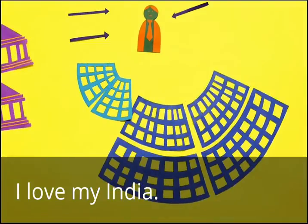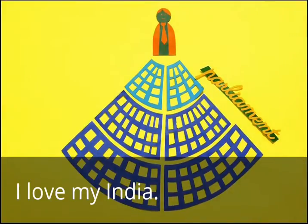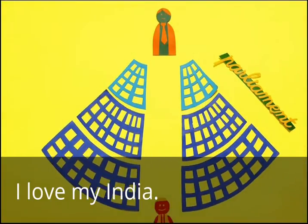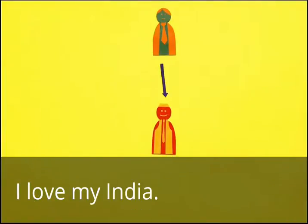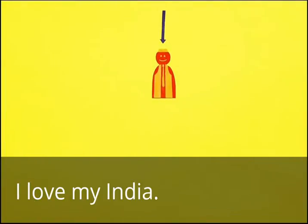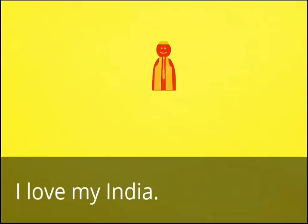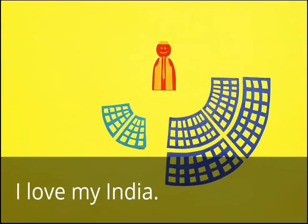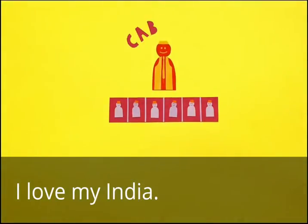The President of India, along with the Lok Sabha and the Rajya Sabha, form the Parliament of India. The head of the government is the Prime Minister, who is appointed by the President of India. The Prime Minister is usually from the political party that holds a majority of the seats in the Lok Sabha. The person appointed as Prime Minister must be a member of either house of the parliament.